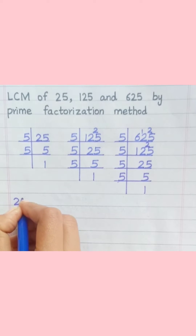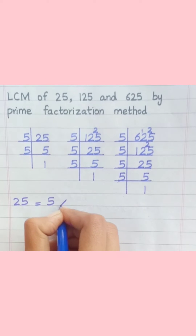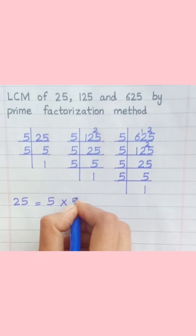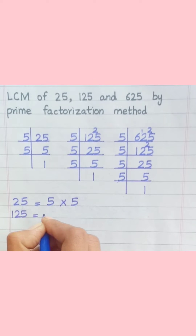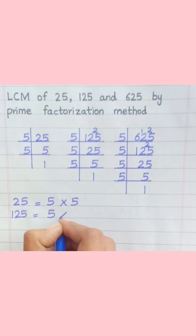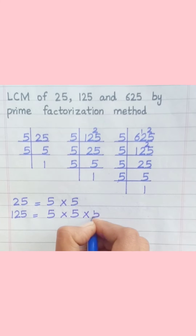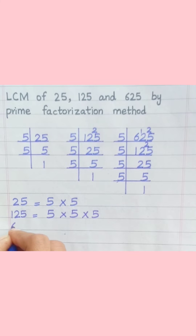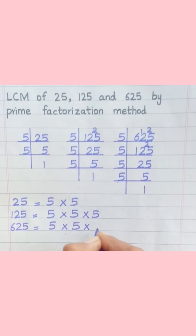25 equals 5 multiply 5. 125 equals 5 multiply 5 multiply 5. 625 equals 5 multiply 5 multiply 5 multiply 5.